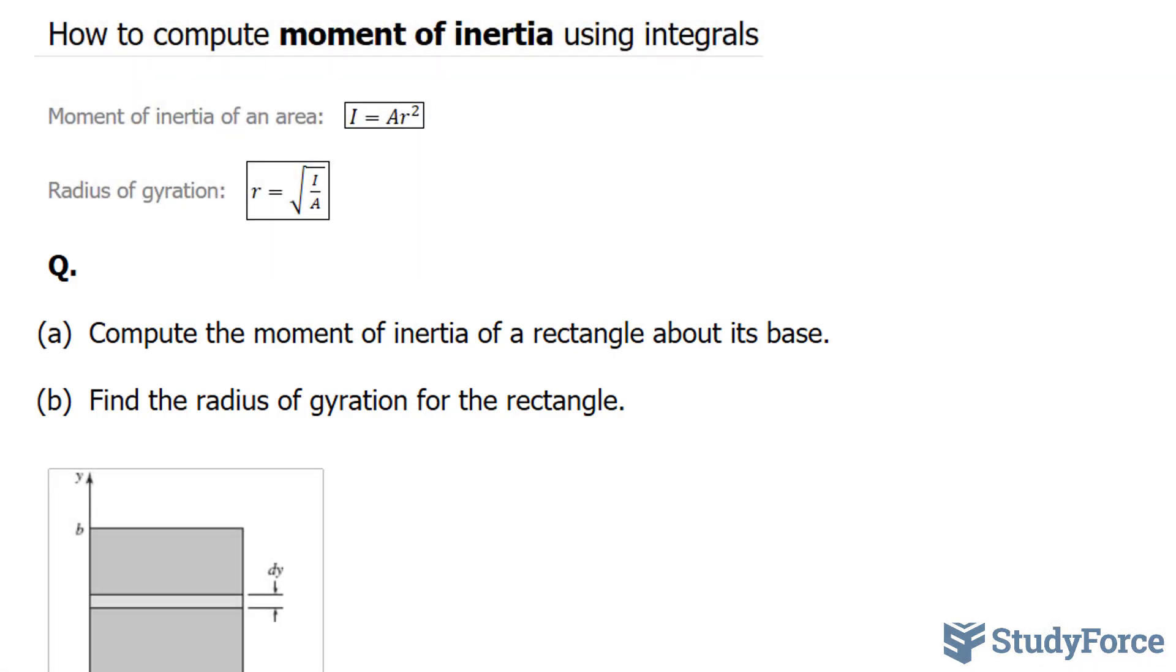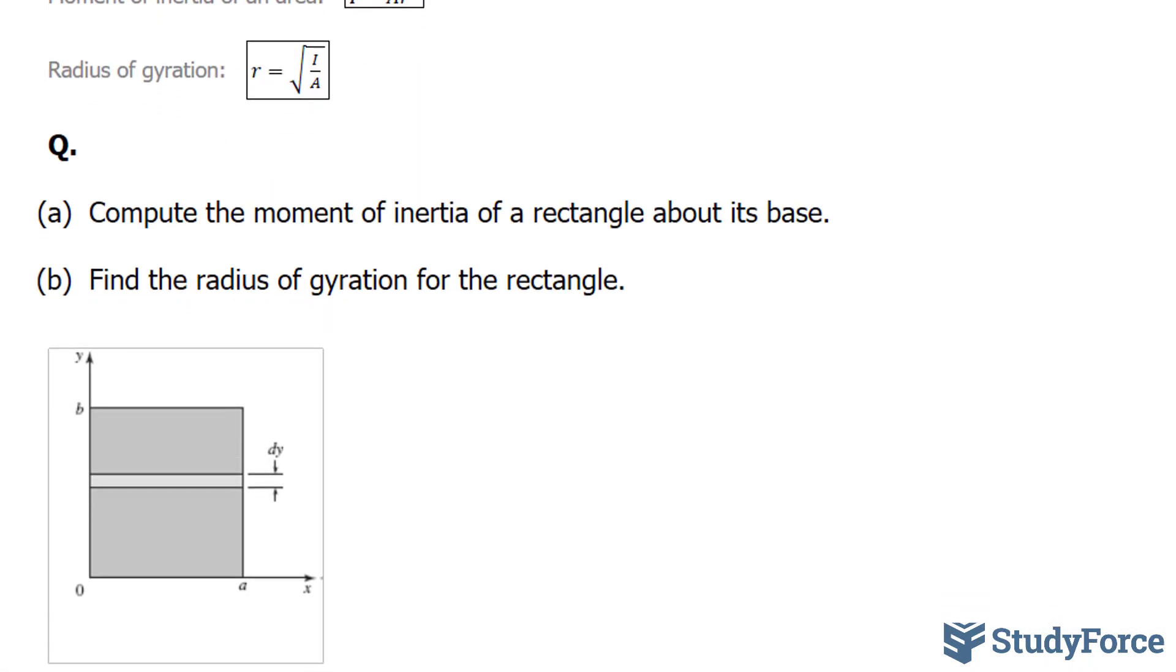So we'll start with question A, and this question is a generic inertia type problem with integrals, where we don't have numbers, we're just working with letters. To compute the moment of inertia for this particular case, we draw a single strip of an area that is parallel to the axis about which we are taking the moment. So the base of this rectangle is right here.